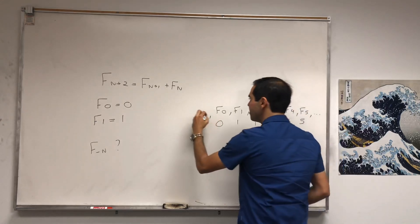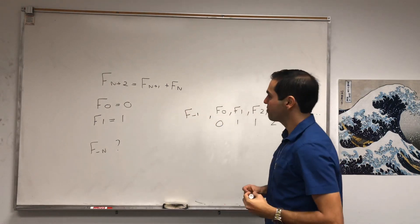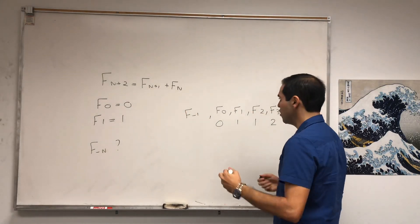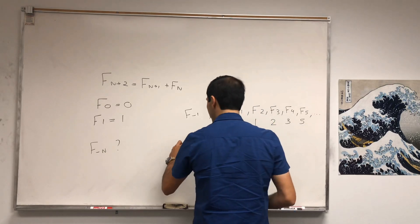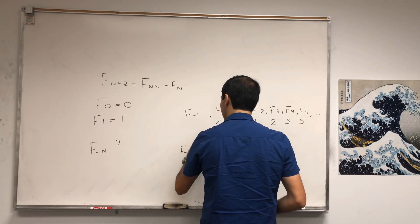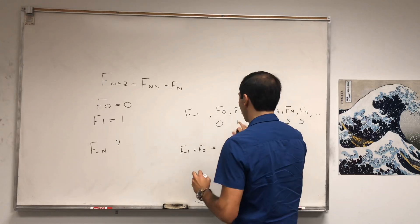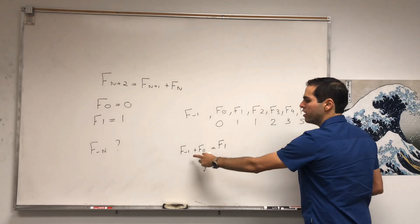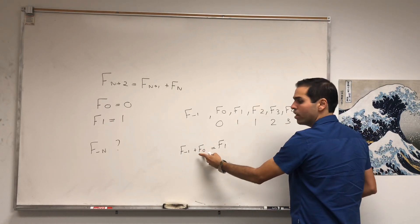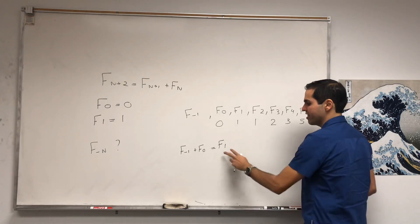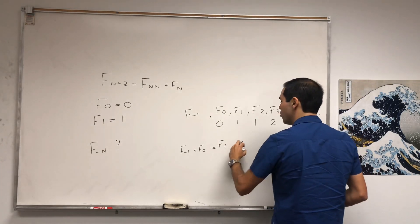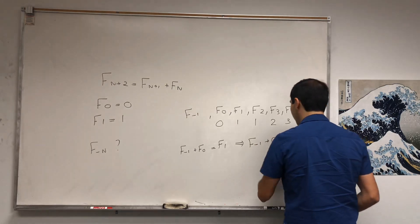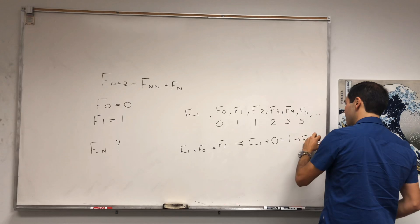Now the question is, what is F of negative 1? We still have this formula. So in particular, what is F of negative 1? We know that if you sum F of negative 1 with F of 0, you get F of 1. It's still true that if you sum up the present and one generation later, you get two generations later. So F of negative 1 plus 0 equals 1, meaning F of negative 1 is 1.